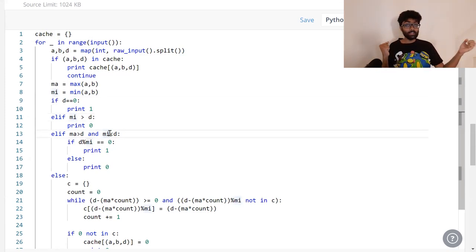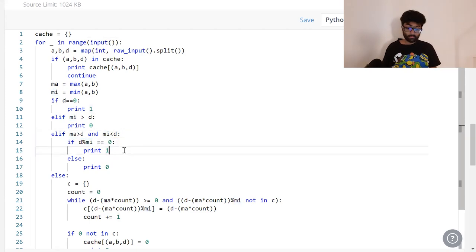If one weight is greater than d and one weight is less than d, what do we do? Say we've got to combine four and ten in order to get eight. We can't use the ten weight. It's just too heavy. So we only focus on the four. If that eight, if d is a multiple of four, then we can put together a certain number of fours to get d. However, if it's not a multiple of d, then regardless of how many fours we use, it will never achieve d. That's why we print one only if d is a multiple of the smaller weight. If it's not, we print zero.